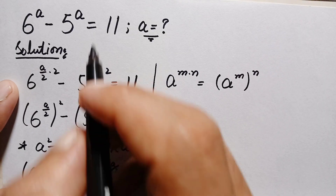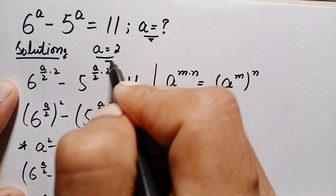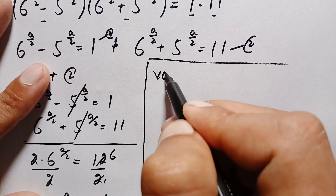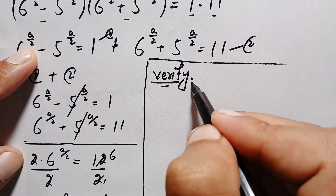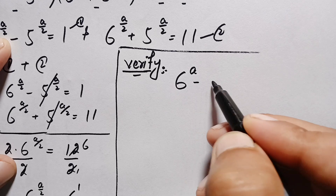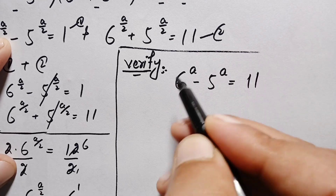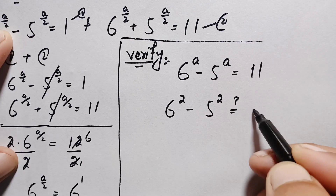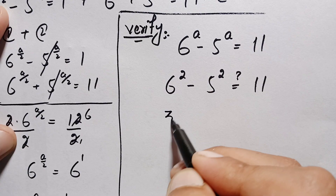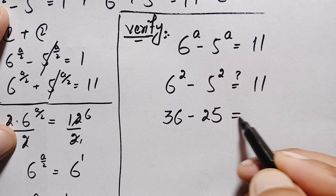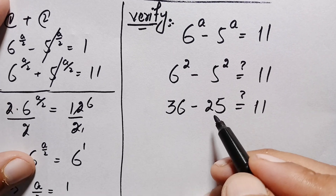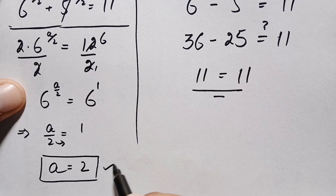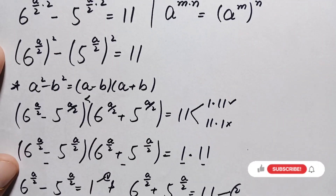We will verify the value a equals 2 in the original equation. Rewriting the problem: 6 raised to power a minus 5 raised to power a equals 11. Substituting a equals 2: 6 raised to power 2 is 6 times 6 equals 36, minus 5 times 5 equals 25, so 36 minus 25 equals 11. Since both sides are equal, a equals 2 is the exact and correct solution.